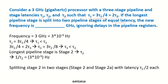It is given that it is a 3-stage pipeline and the pipeline stage with the longest latency is being split into 2 pipeline stages. We need to find which is the longest stage. The frequency is 3 GHz. It is given that τ1 = (3/4)τ2, which means τ1 is less than τ2.